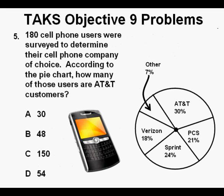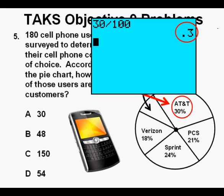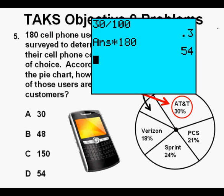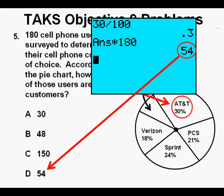Problem 5. 180 cell phone users were surveyed to determine their cell phone company of choice. According to the pie chart, how many of those users are AT&T customers? This problem is very similar to problem 3. AT&T serves 30% of the users surveyed. Converting 30% to a decimal: 30 divided by 100 equals 0.3. We multiply 0.3 by 180, press Enter, and get 54 users. So we circle our correct answer D.